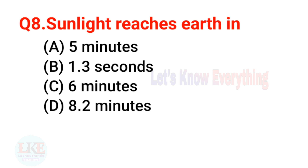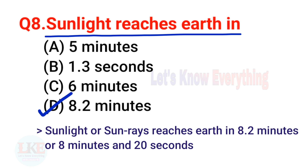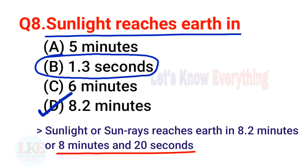Question 8: Sunlight reaches Earth in 8.2 minutes, or 8 minutes and 20 seconds. Don't forget to remember that moonlight reaches Earth in 1.3 seconds.